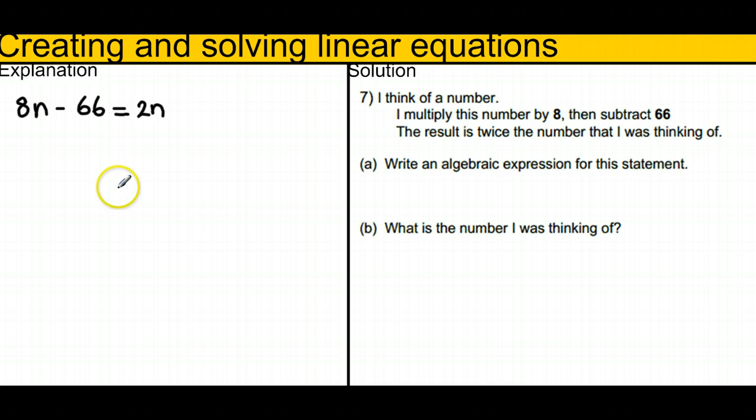And then we've got a little equation that we can solve. I'm just going to add on 66 to both sides. And that gives me 8n equals 2n plus 66.